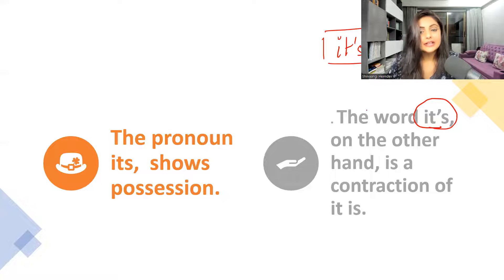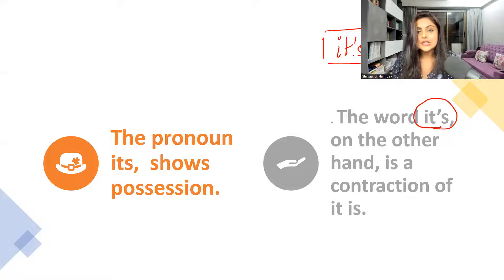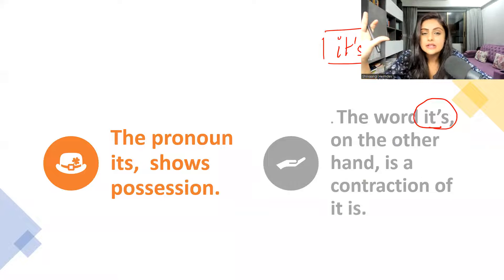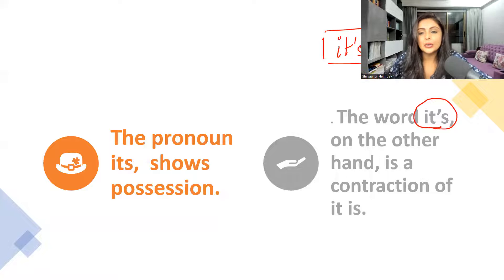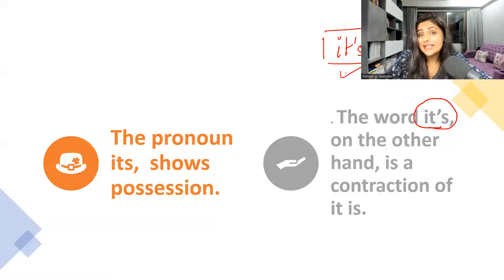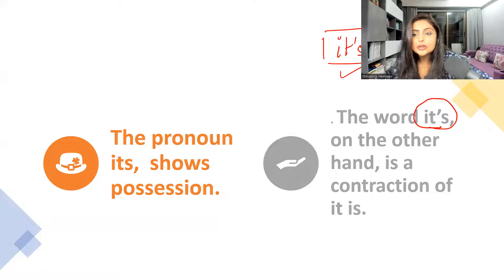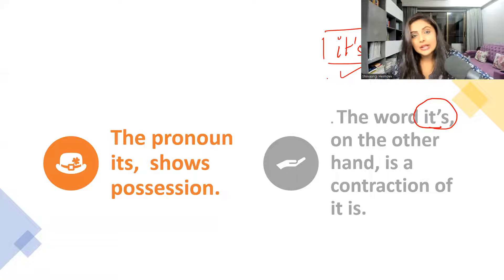'It's' with an apostrophe s is nothing but a contraction — a short form of 'it is.' So if you have to say 'Hey, it's a pleasant day,' you can use 'it's' with an apostrophe because you are trying to say 'it is a pleasant day.' Similarly, 'it's a pleasant climate' — you use the apostrophe s because you mean 'it is a pleasant climate.'